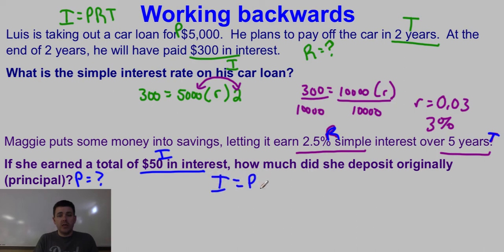I equals PRT. Plug in what we know. Interest is $50. Principal, I don't know, but I know the rate is 2.5% or 0.025. The time is five, so I'm going to plug that in.